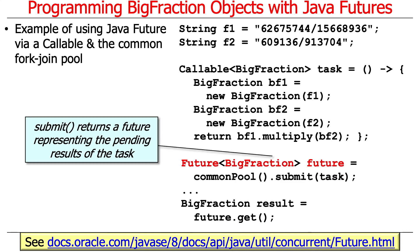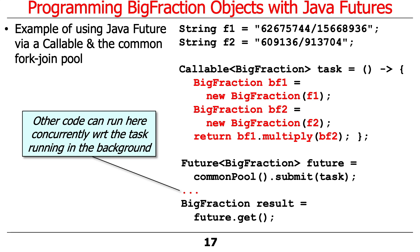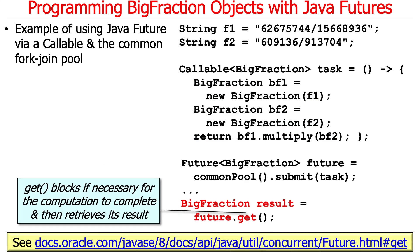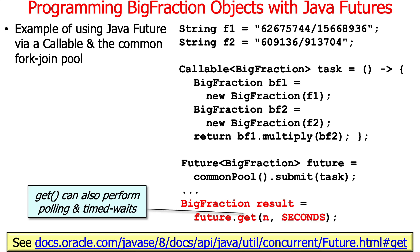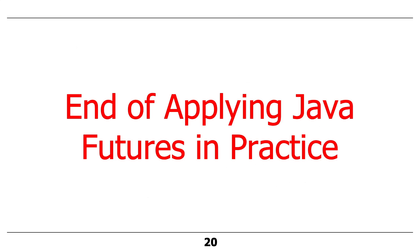That Future can then be used to obtain the result at some point. The key thing is the dot-dot-dot — there should be other code between the submit and the get. If there's no other code, we've completely wasted time doing things asynchronously, because we're just turning around and blocking immediately. The get() call will block until things complete successfully or unsuccessfully, and then the results — either a success or an exception — will be retrieved. You can also do polling and timed waits, though as we'll see later, it's almost always a bad idea to do timed operations. That is a quick overview of how to apply Java Futures in practice.